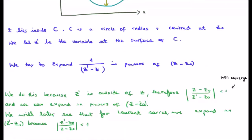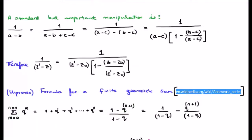We will see later that when we do a similar process for the Laurent series, we expand not in (z minus z_0) but in (z prime minus z_0), and we have to swap the terms in order to get convergence. To do this power series expansion, we perform a standard algebraic manipulation. Take 1 over a minus b, introduce another variable c by adding and subtracting, and rearrange so that we have (a minus c) outside of 1 over 1 minus (b minus c)/(a minus c). Plugging in our variables with z prime minus z and using z_0 for c, we rearrange accordingly.